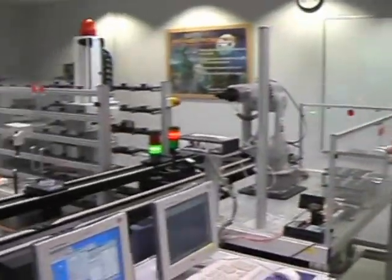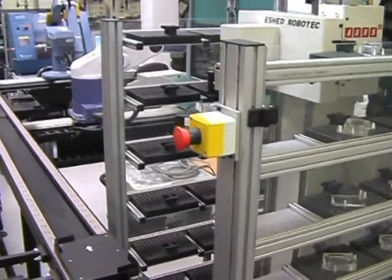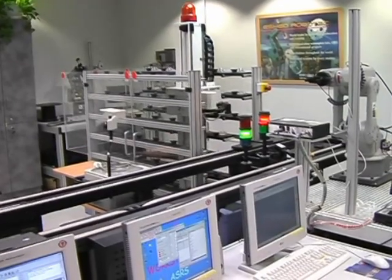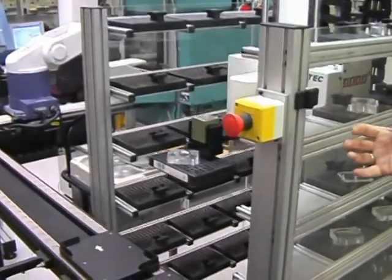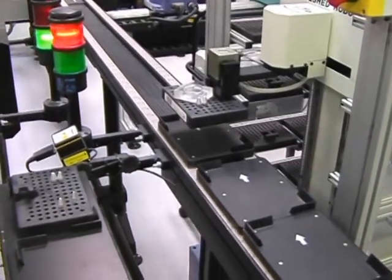This is the automated storage system that sends out the raw material and receives the finished products. The ASRS takes the raw material, checks it with the barcode reader to verify it is the material specified in the production plan, and sends it to the next station.